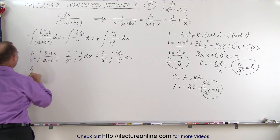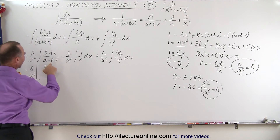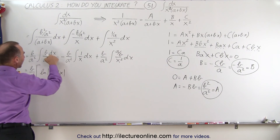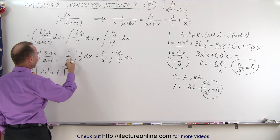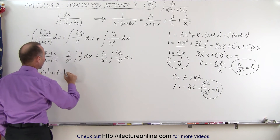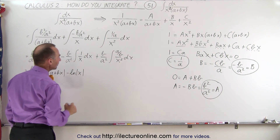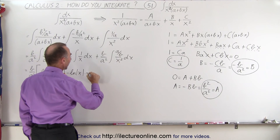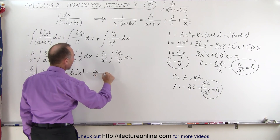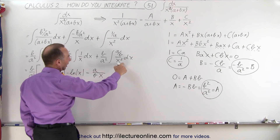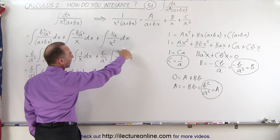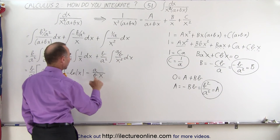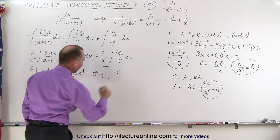So with b over a squared factored out from all three, we can now integrate. The first integral becomes the natural log of (a plus bx), since we have b dx in the numerator. The second becomes minus the natural log of x. The third becomes minus a over b times x to the minus 1 divided by minus 1, which gives a over b times 1 over x — hence the minus sign and x in the denominator. Plus a constant of integration.